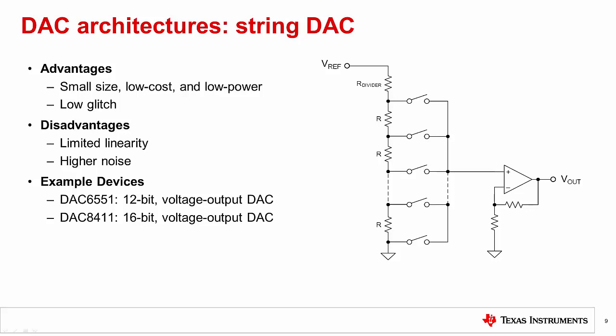As resolution increases, the number of resistors in the string exponentially increase as well. In general, an n-bit DAC will have 2 to the n resistors. As a result, the string DAC gets inefficient at larger resolution.